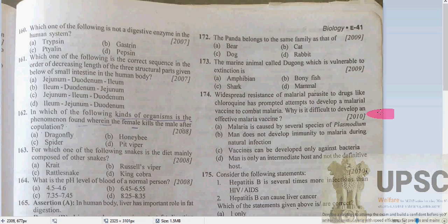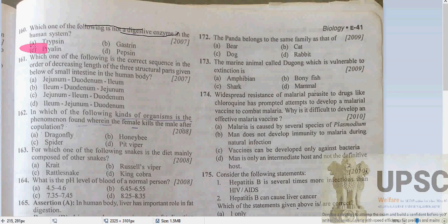Hello guys, welcome to UPSC Welfare. We are trying to complete all the sequence by chapter of UPSC questions which have been asked already. So let's see here — which one of the following is not a digestive enzyme? Trypsin is definitely a digestive enzyme, pepsin is also a digestive enzyme, but gastrin is a hormone.